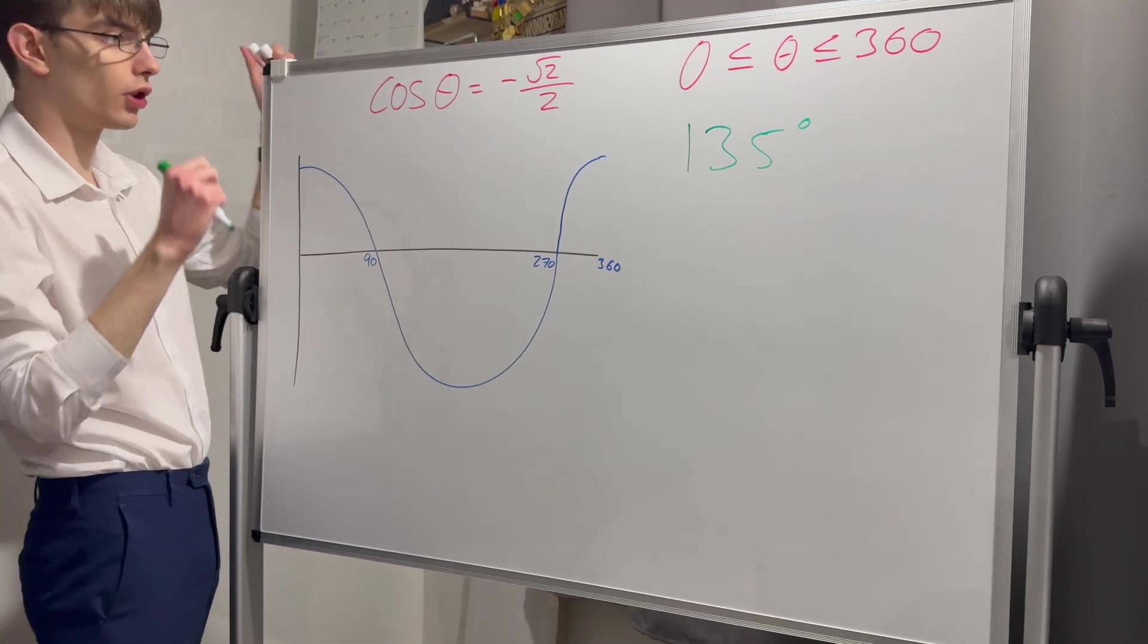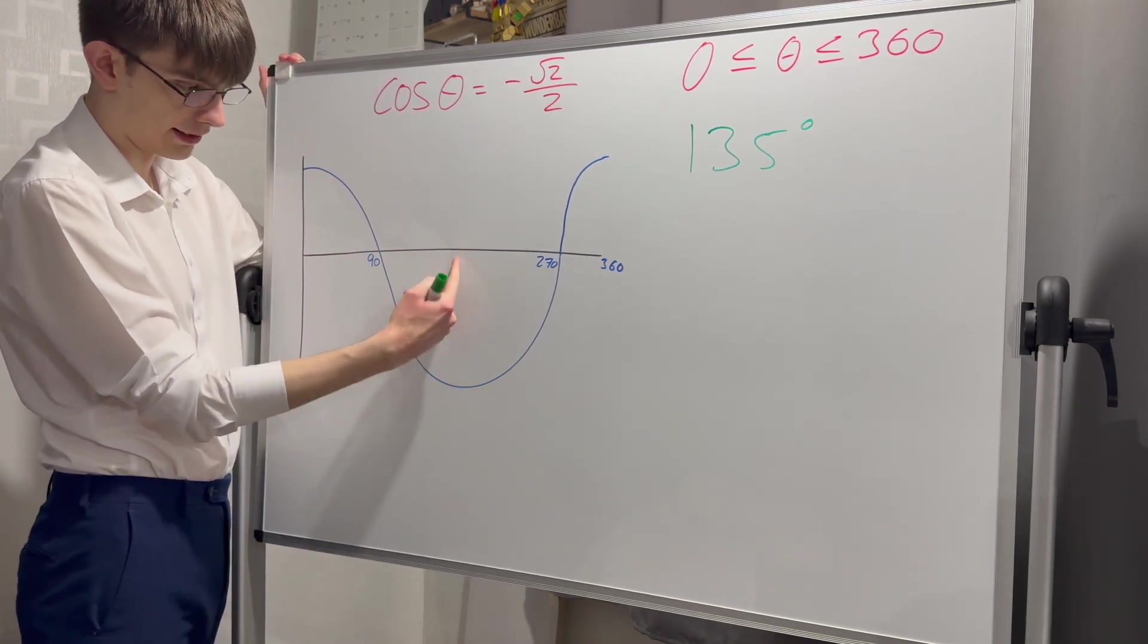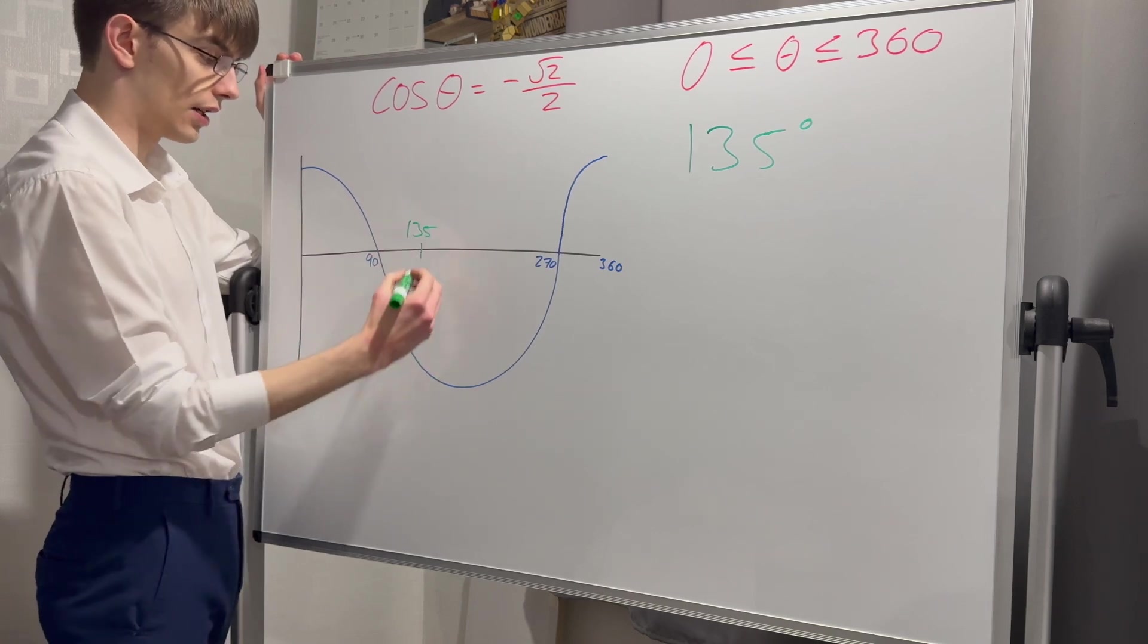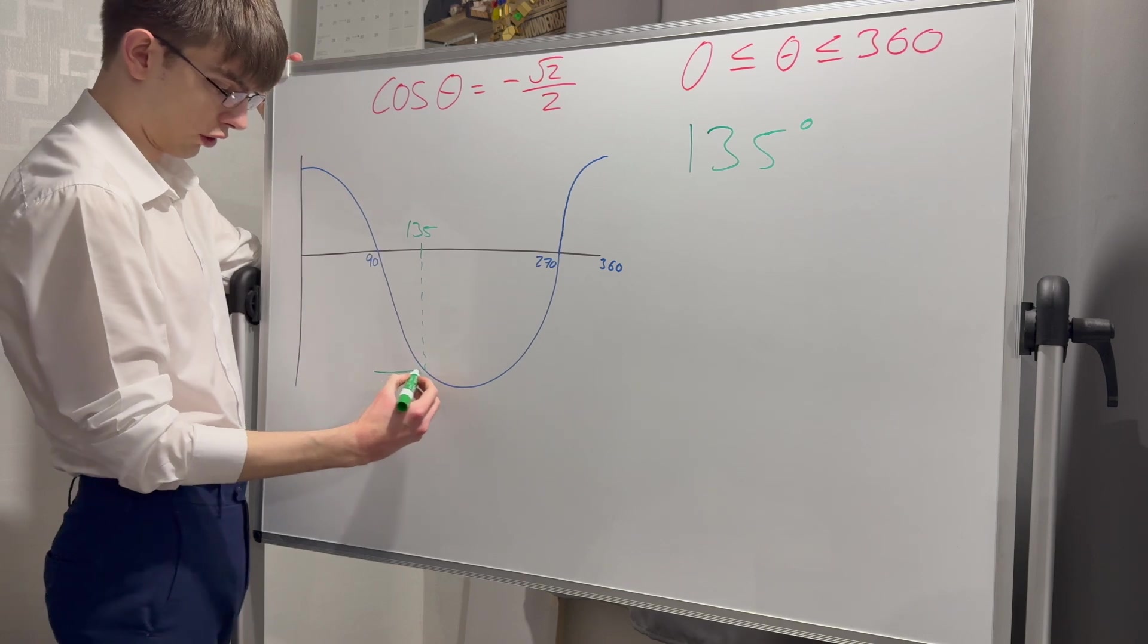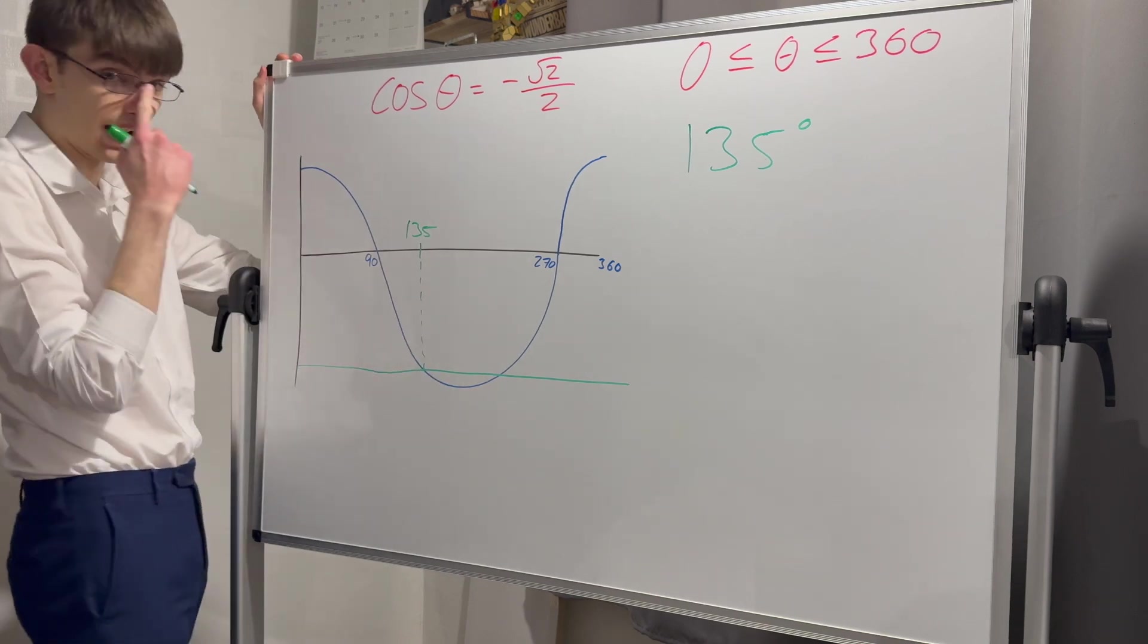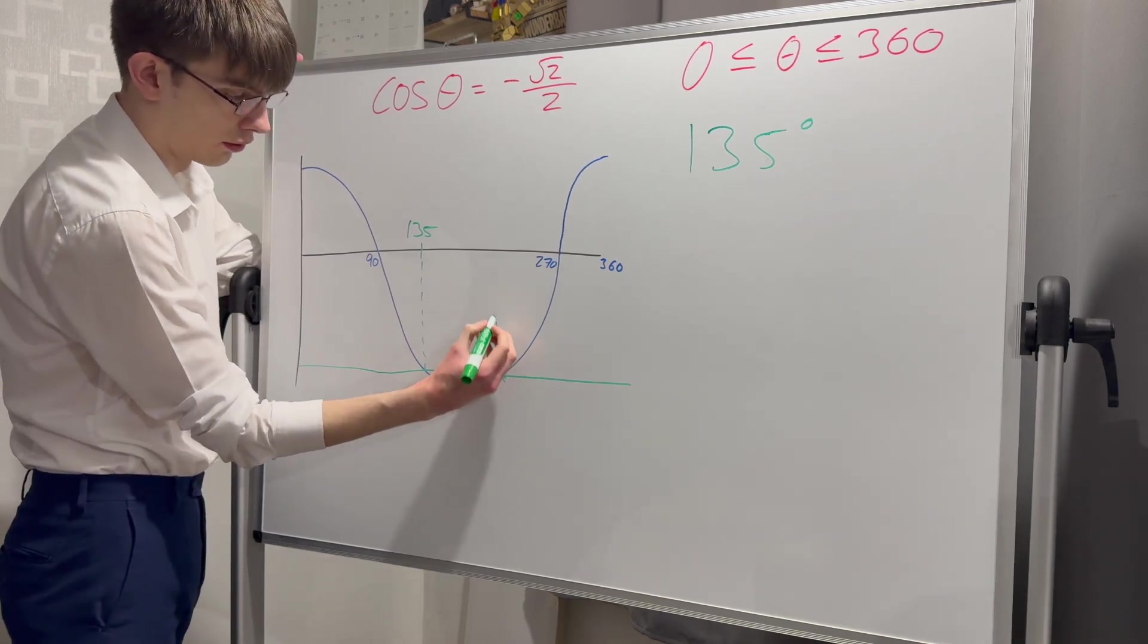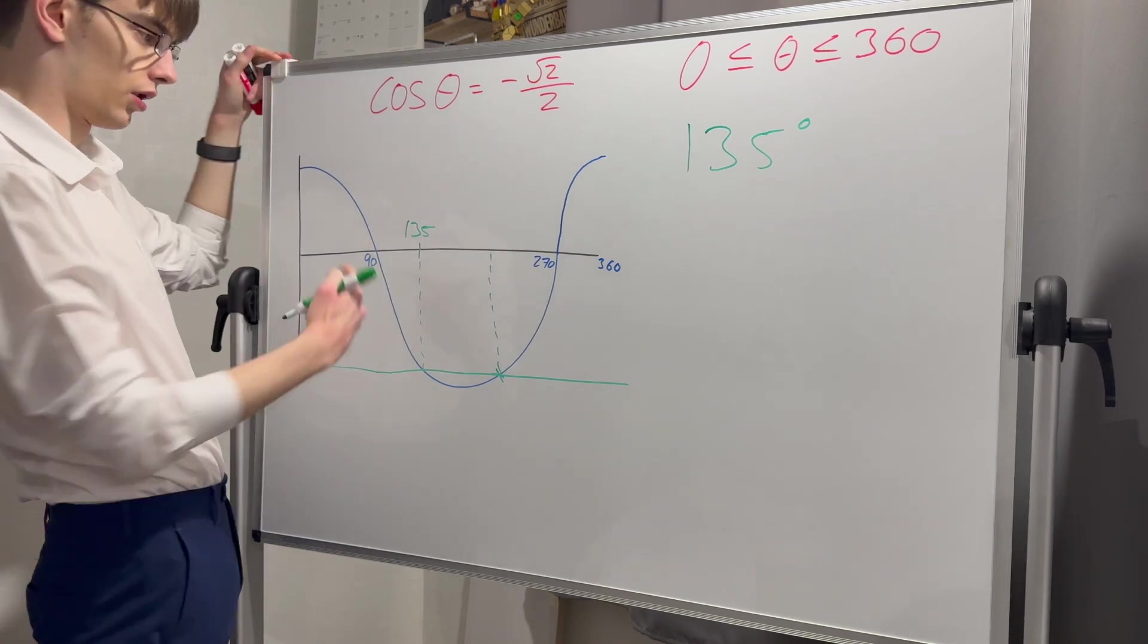Once again, I'm going to find this on my x-axis. 90 is here, 180 is where my peak is on my cosine graph, so 135 is going to be about there. Draw my line down to find my graph. Draw a horizontal line the whole way across. Between zero and 360, where does it hit? It hits twice, once here and once here.